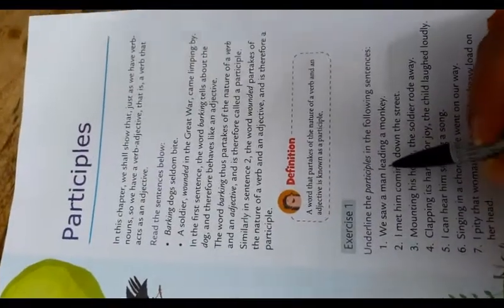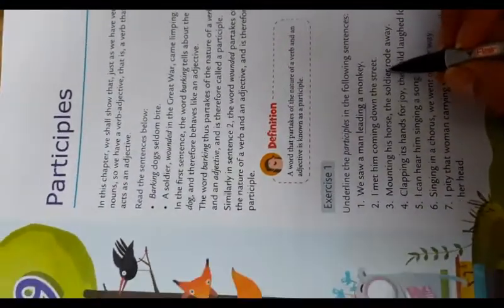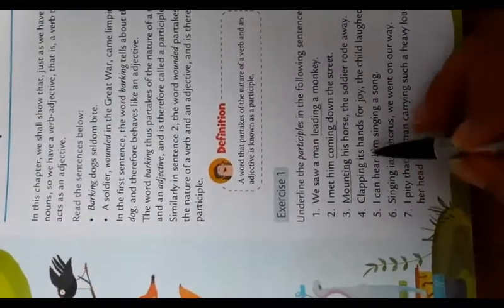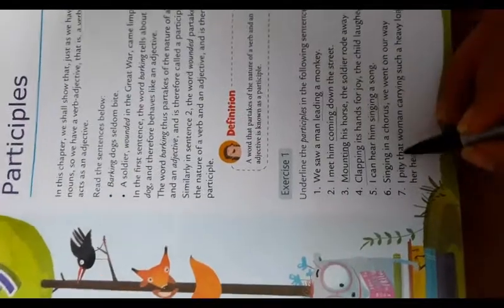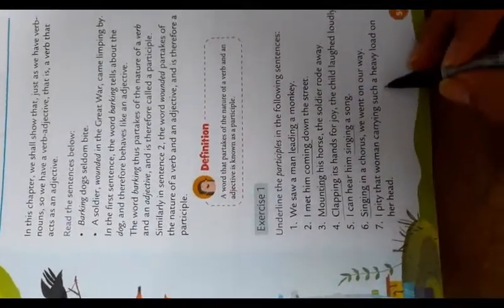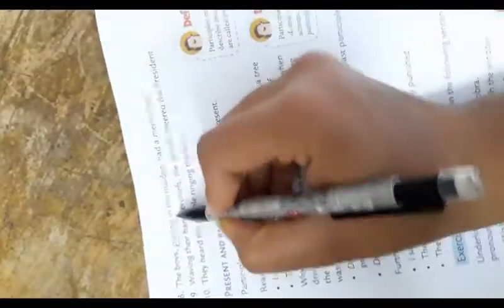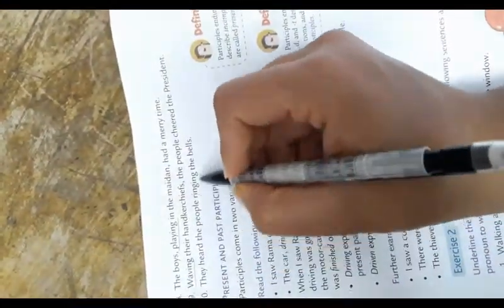Exercise 1: Underline the participle in the following sentences. 'We saw a man leading a monkey' — participle: 'leading.' 'I met him coming down the street' — 'coming.' 'Mounting his horse, the soldier rode away' — 'mounting.' 'Clapping its hands for joy, the child laughed loudly' — 'clapping.' 'I can hear him singing a song' — 'singing.' 'I pity that woman carrying such a heavy load on her head' — 'carrying.' 'The boys playing in the field had a merry time' — 'playing.' 'Waving their handkerchiefs, the people cheered the president' — 'waving.' 'They heard the people ringing the bells' — 'ringing.'